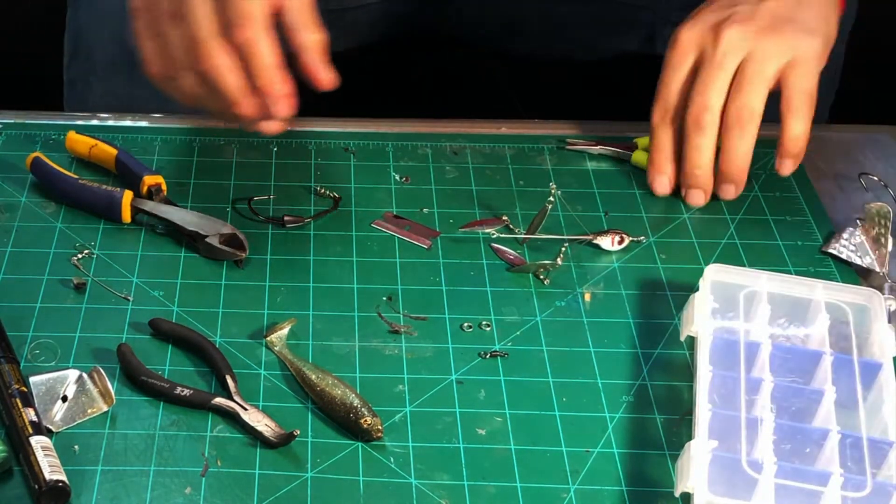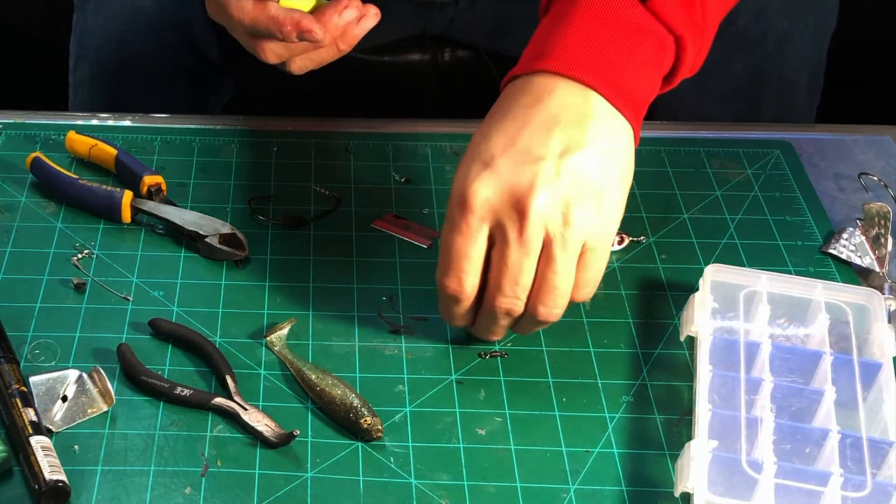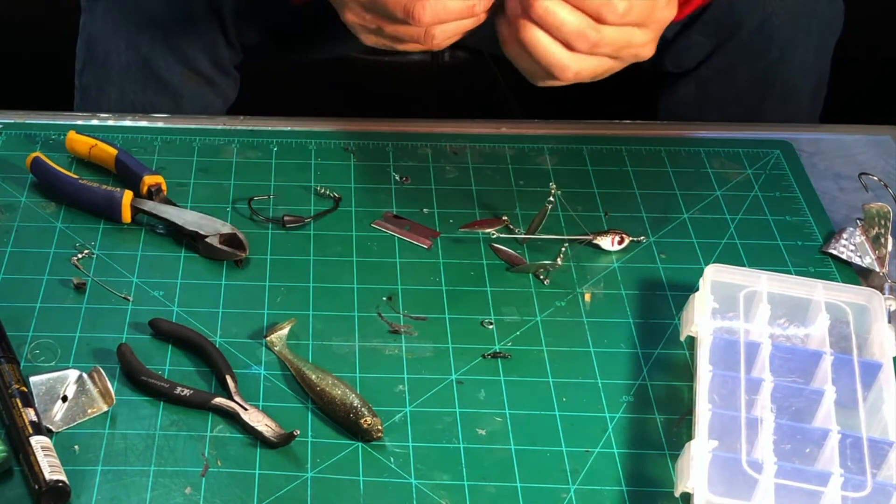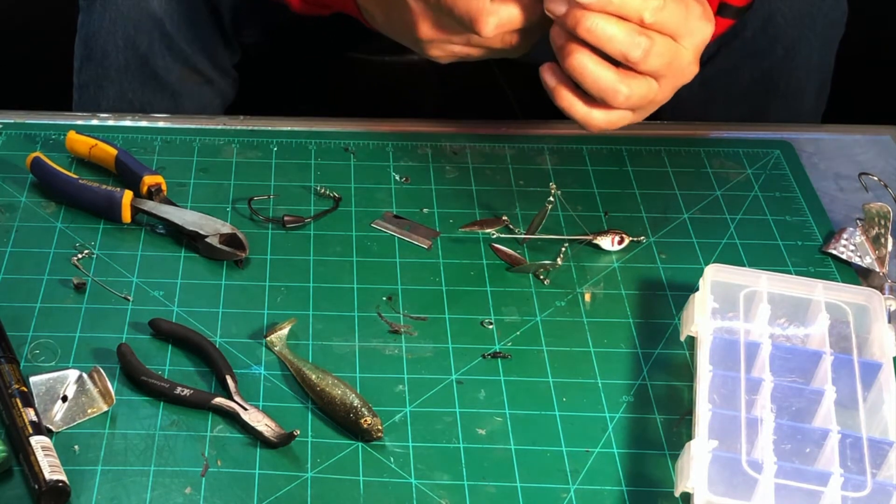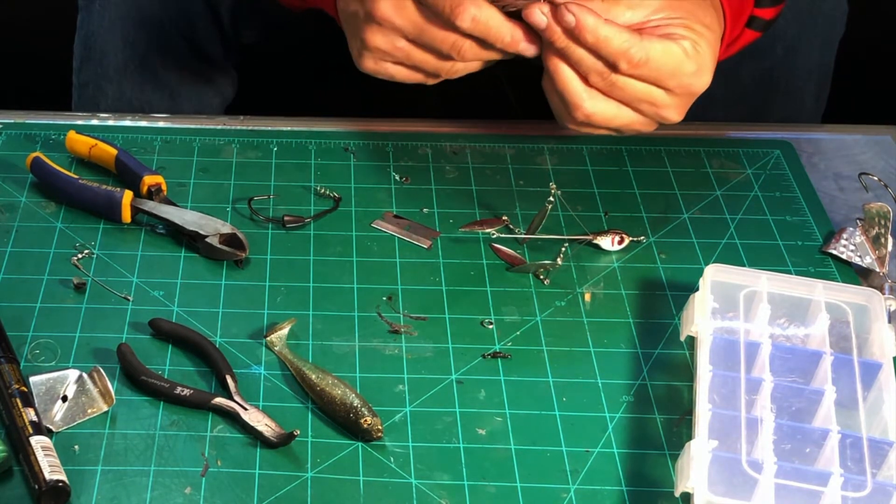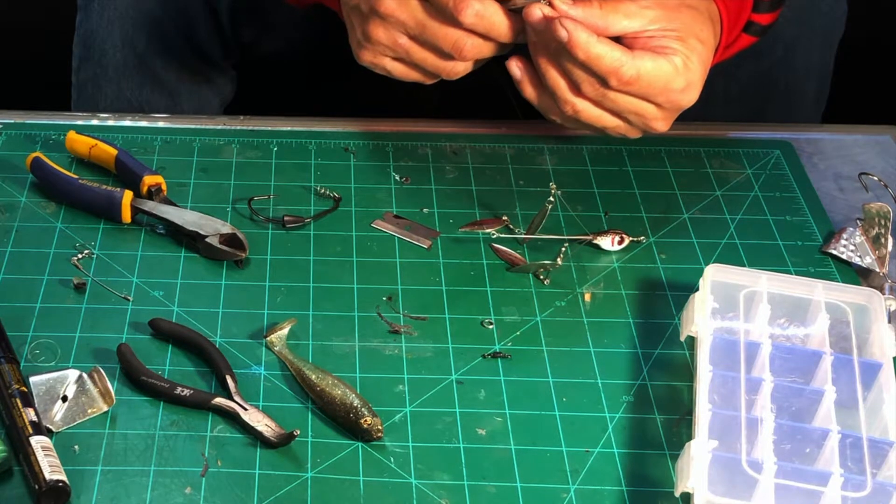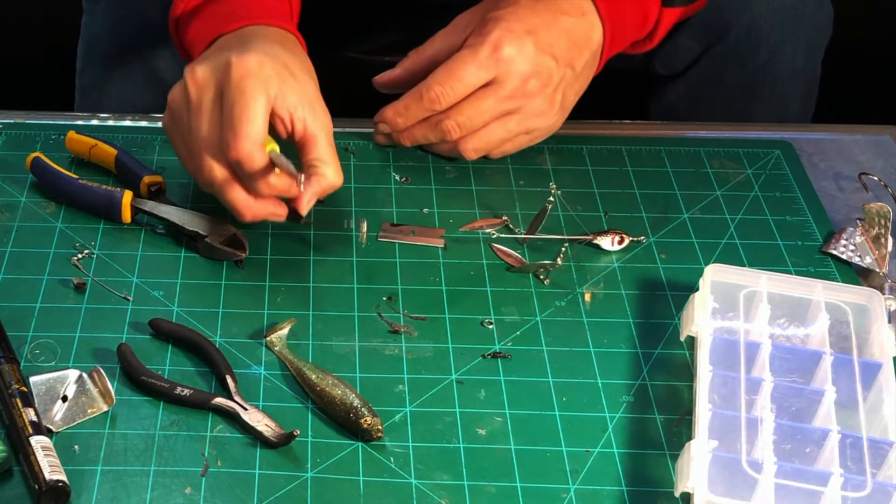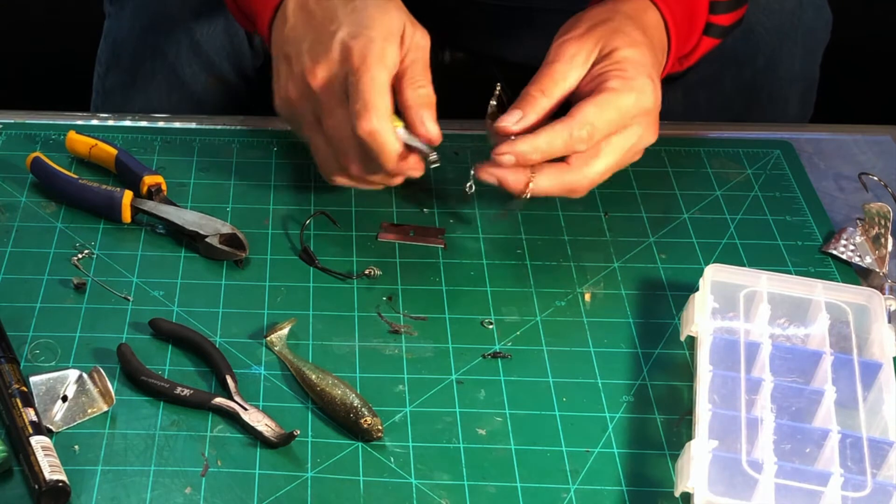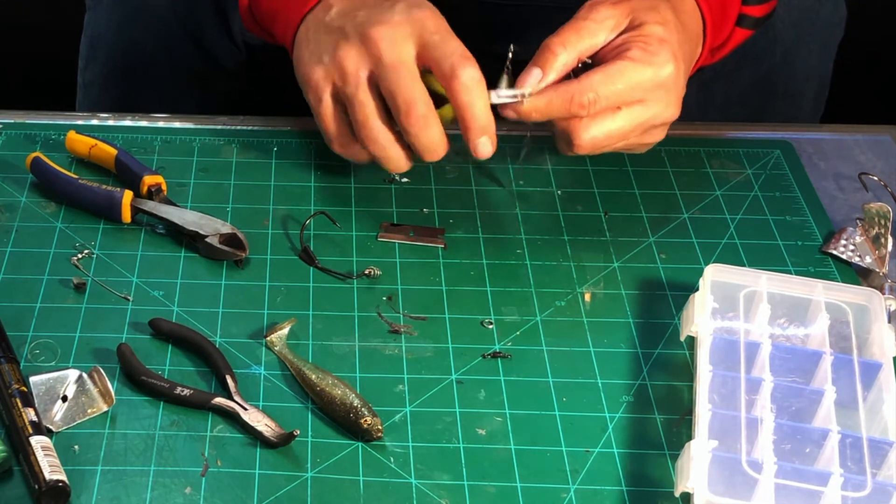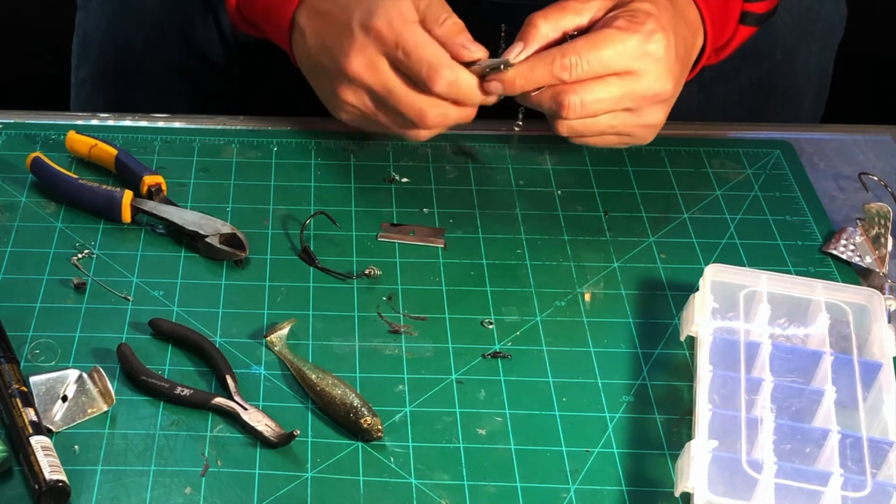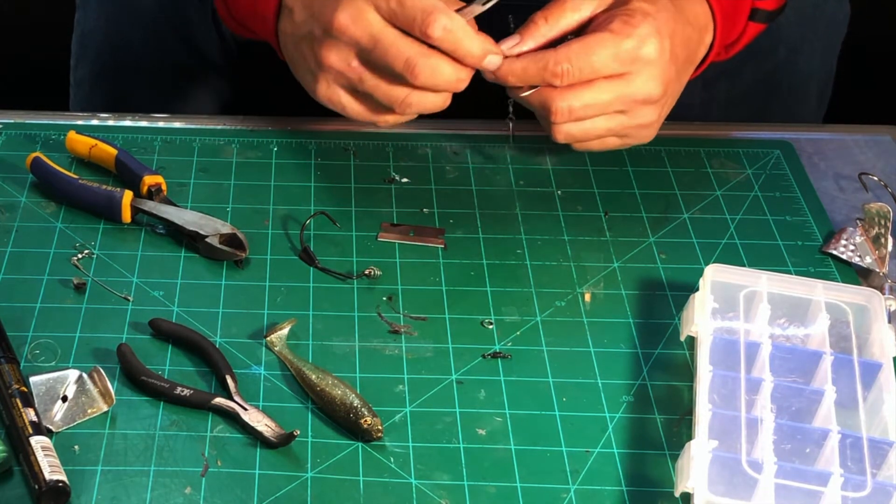So this is super easy. You just get your split ring pliers and you just rig it up. The only thing that's kind of tricky is getting a split ring on swimbait hooks sometimes, because they're pretty heavy gauge wire and it's hard to get a really big split ring. If you're going for like a beefier split ring, you might not be able to get it through the eye of the hook.